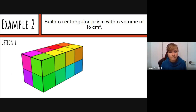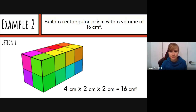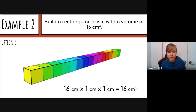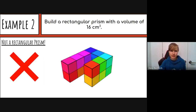Here is one option: 4 long, 2 wide, and 2 high, so 4 times 2 times 2 equals 16. Another option is 8 long, 1 wide, and 2 high — 8 times 1 is 8 times 2 is 16. The last option is 16 long, 1 wide, and 1 high.